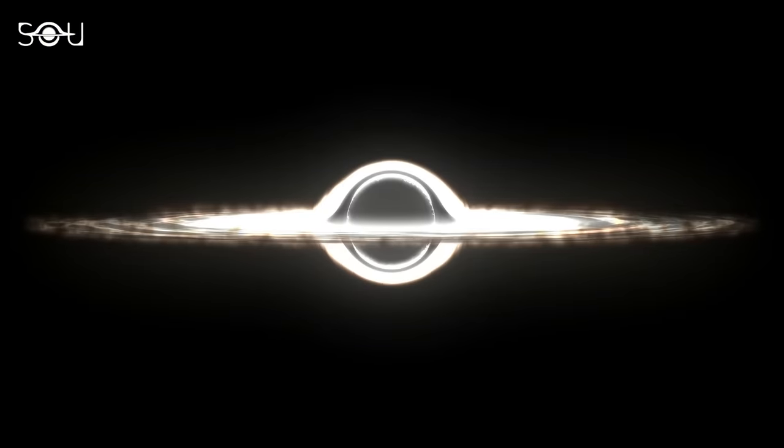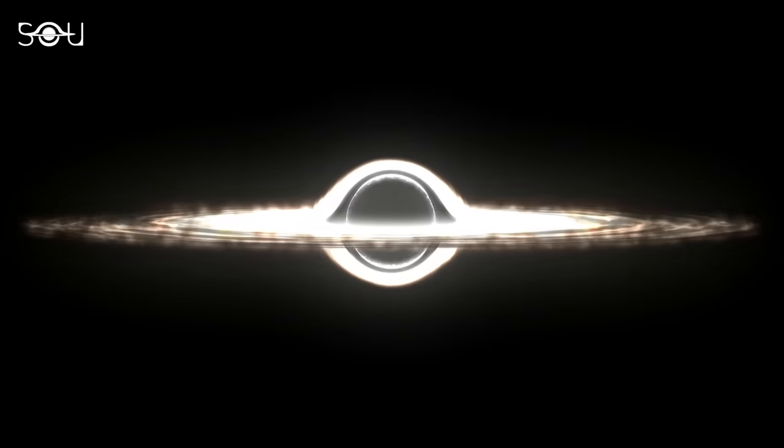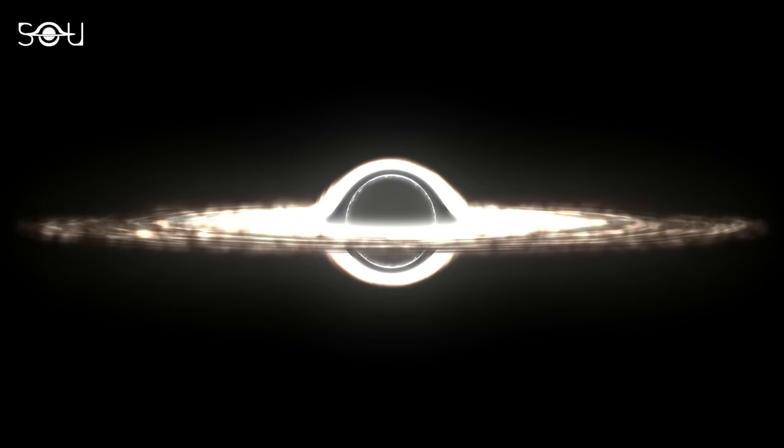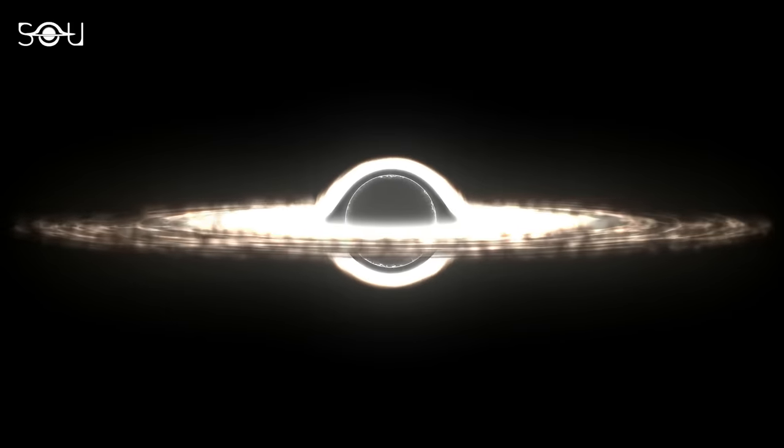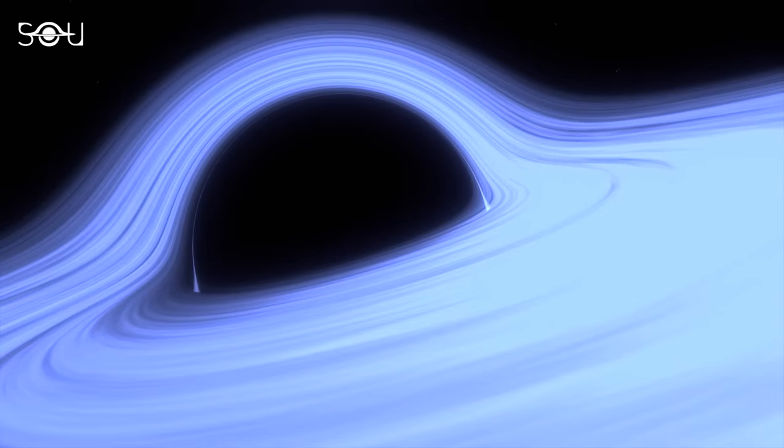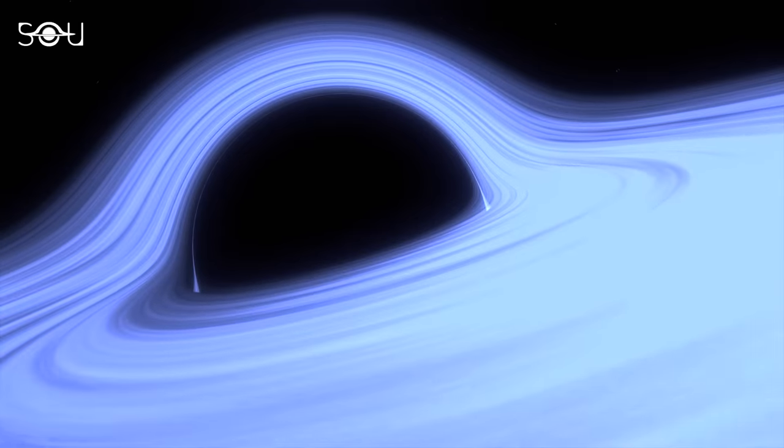But more importantly, the mass of the black hole itself is converted into energy that escapes out of the event horizon. Therefore, Hawking radiation reduces the mass and energy of the black hole.